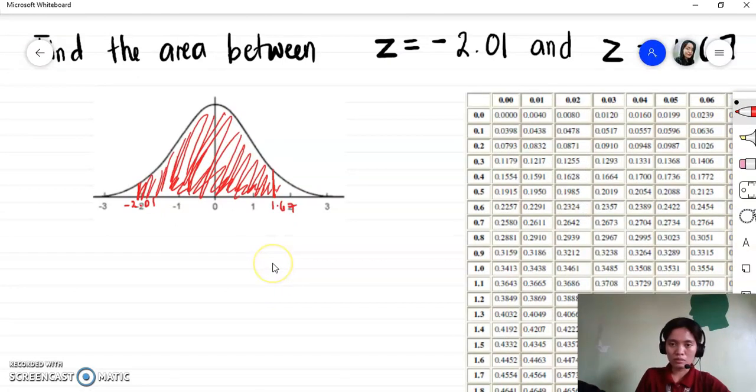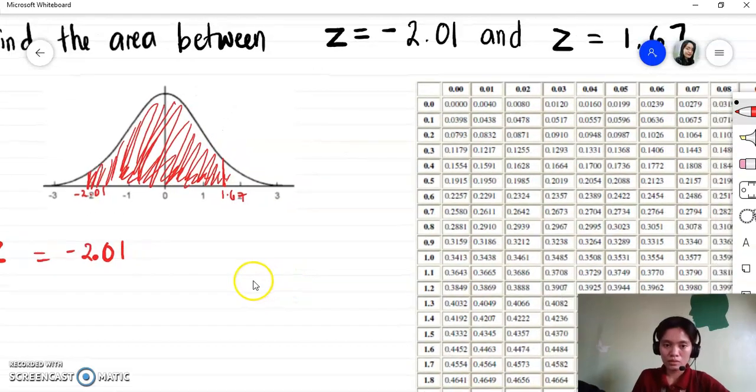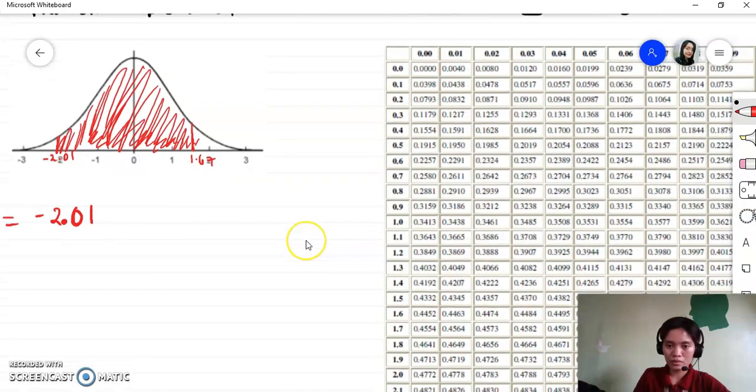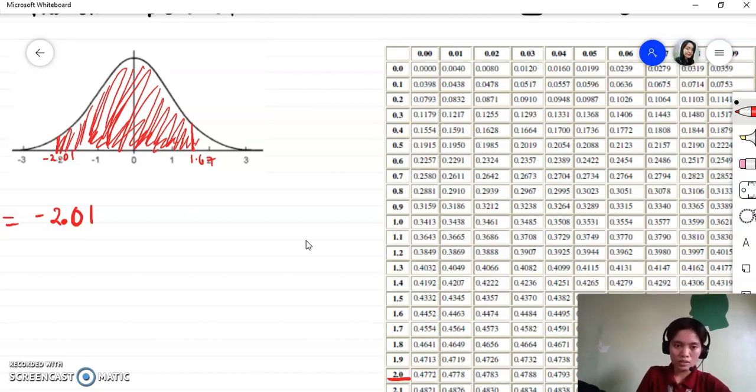In your normal table or Z table, look for the area from 0 to negative 2.01. Look for the first two digits, you have 2.0. Then the last digit is 1. So match it. You have 0.4778.